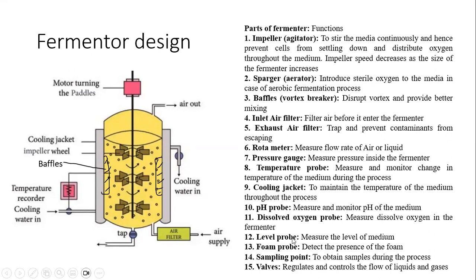If the level is more than prescribed, some amount of medium is removed through the outlet. Then we have a foam probe — because of the vortex effect, foam is often formed and detected by the foam probe. Anti-foaming agents are then added into the fermenter if there is excessive foam, as this can block various walls or pipes attached to the fermenter.